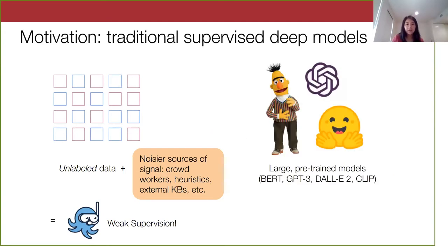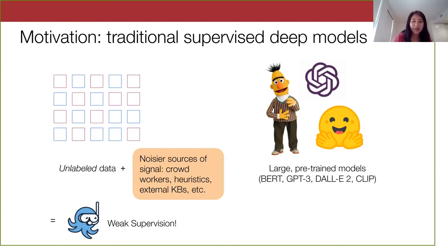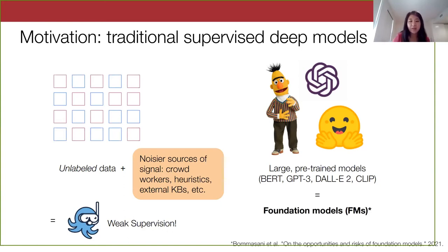On the model training end, we've also recently seen the rise of large pre-trained models such as BERT, OpenAI's GPT-3, CLIP, and just this week DALL-E 2. These models are trained on very diverse corpora of data and are known to generalize well. As a practitioner, you can just grab one off the shelf at a hub like Hugging Face and use it for your own task. For the rest of the talk, I'm going to refer to these models as foundation models or FMs.